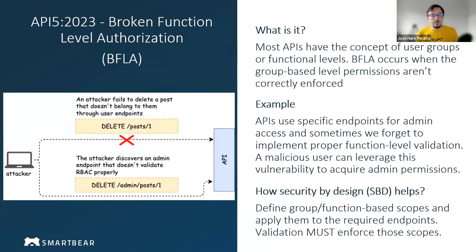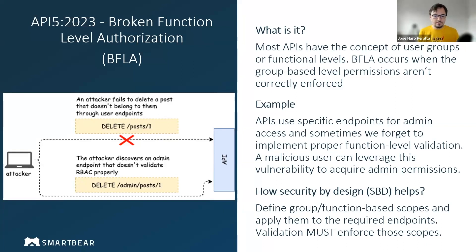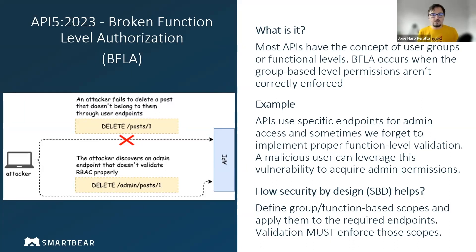Broken function level authorization is related to users accessing data that doesn't belong to them. In most applications, we have a concept of user groups or user functions, and depending on which group we belong to, we can perform certain operations or access certain resources. The most common differentiation is between admin users and normal users. Admin users can perform nearly any operation, while normal users are limited. This vulnerability happens when a user can bypass those role-based access controls and perform operations that don't belong to their class of user.